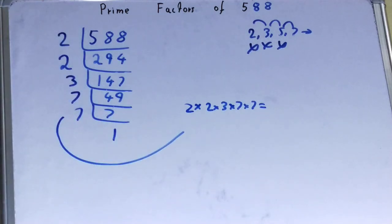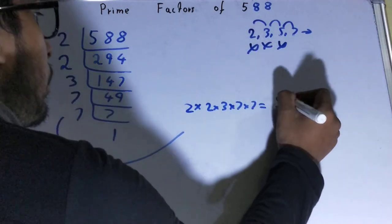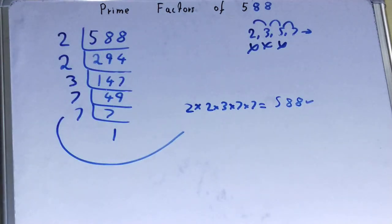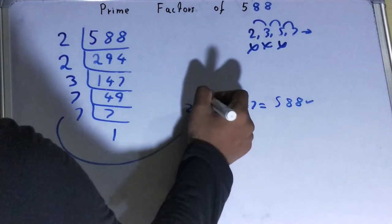Now if you want to check whether it is right or not, you can multiply it. And if on multiplying, you get the number back again, that means your calculation is correct. If not, you need to recheck.